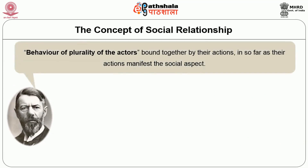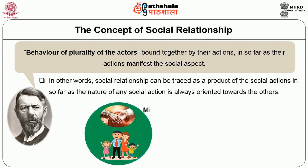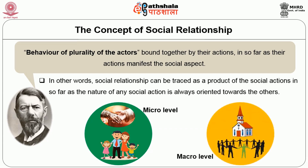The concept of social relationship. When Weber speaks of social relationships, he refers to the behavior of a plurality of actors bound together by their actions in so far as their actions manifest the social aspect. In other words, social relationship can be traced as a product of social actions, in so far as the nature of any social action is always oriented towards others. In principle, social relationship can be at the micro level — for example, marriage or parent-child relationship — or at the macro level, that is, associations, churches, political parties, universities, etc.